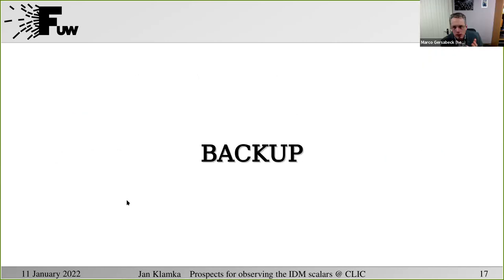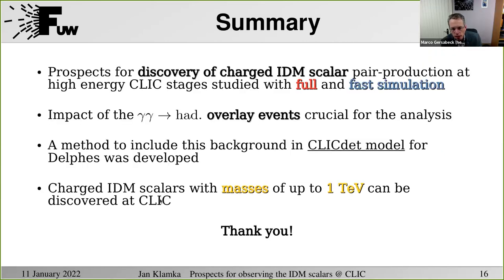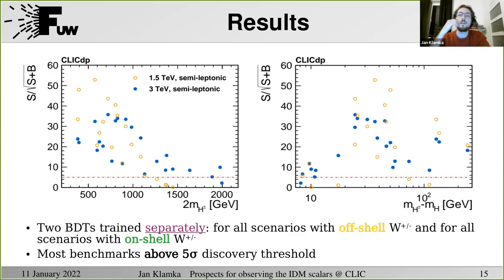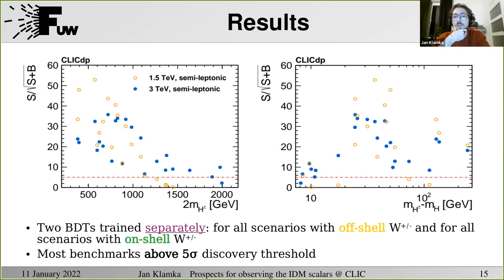Thanks very much for the nice talk. You spoke here about an analysis aimed at CLIC. We don't know exactly what accelerator we will have in the future, so can you comment on how this might translate to other e+e- colliders? The ILC could possibly be too low in energy. The results mainly depend on the expected significance, which depends on the cross-section, which depends on the mass. So of course, it all depends on the kinematic reach of the future collider.